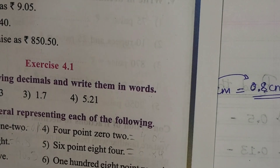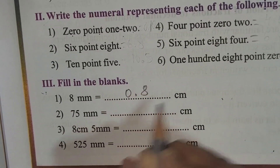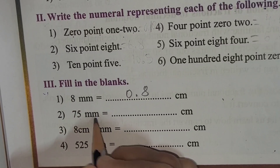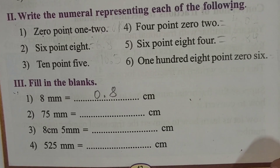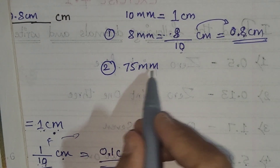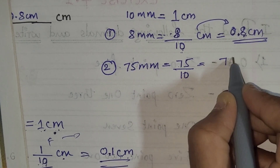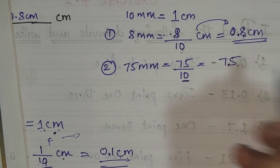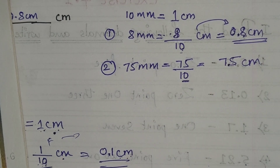So 0.8 centimeters is the answer. Next: 75 millimeters equals dash centimeters. So 75 millimeters equals 75/10. Keep the numerator 75 as-is, there is one zero, so after 1 digit put the decimal point. That gives 7.5 centimeters as your answer.